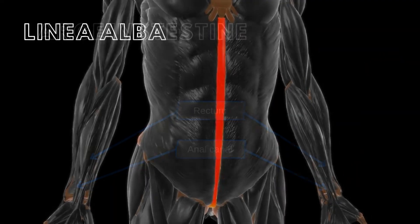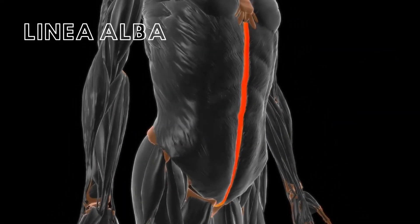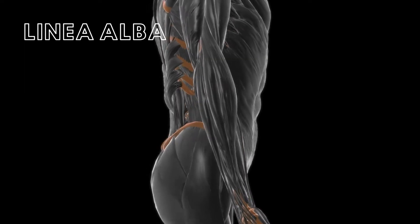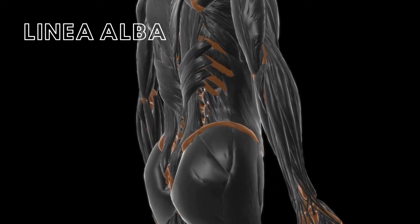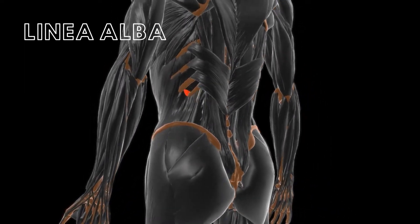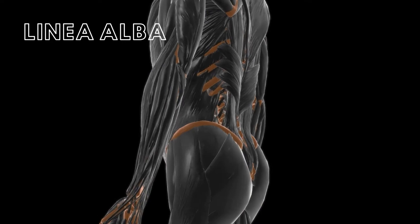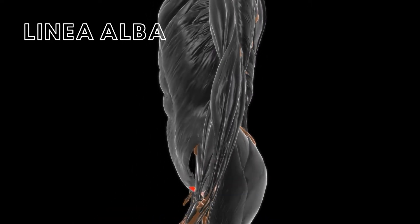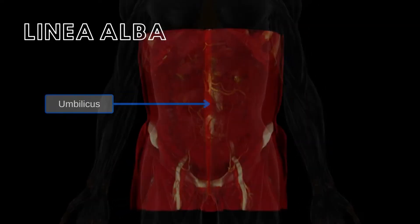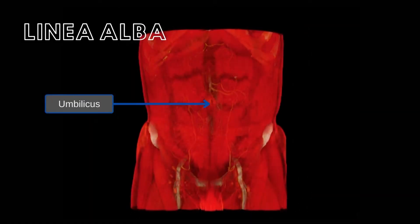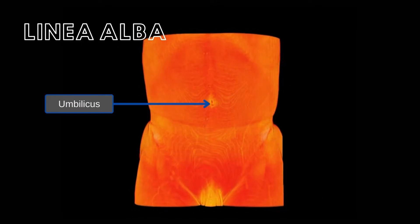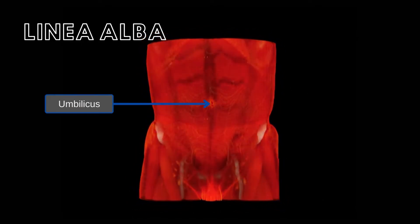The linea alba is a sheath of connective tissue that separates the right and left rectus abdominis muscles and carries nerves and blood vessels to the anterior abdominal wall. Approximately at its midpoint, the linea alba lies deep to the umbilicus and contains the umbilical ring.